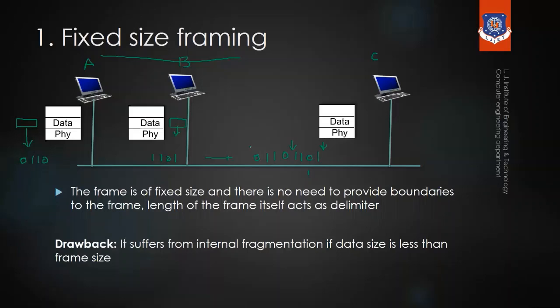But what is the disadvantage of this method? Suppose I want to send a 16-bit frame — I have to divide it into 4 parts because all devices use a frame size of 4 bits. The reverse is also a problem: if I want to send a frame of only 2 bits, I have to combine two 2-bit frames to make a 4-bit frame. That is the disadvantage of fixed size framing.